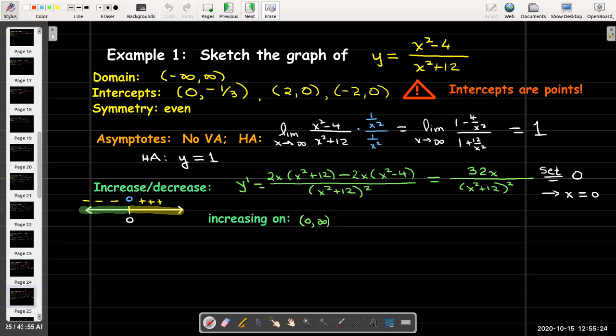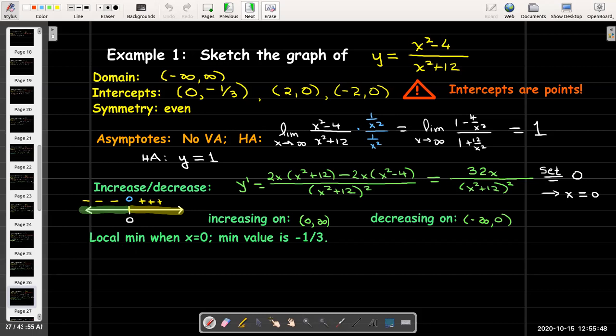That tells me that the curve is increasing for positive values of x, on (0, ∞), and it's decreasing on the negative x values from (-∞, 0). Our local min occurs when x equals zero. It has to be a local min because I'm decreasing then increasing. So at x equals zero, there must be a local min and the min value is negative one-third. It happens to be the y-intercept.